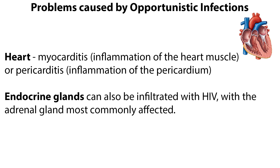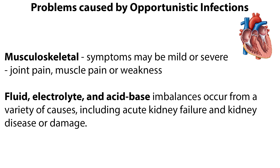Opportunistic infections can also affect the heart by producing myocarditis, or inflammation of the heart muscle, or pericarditis, inflammation of the pericardium. Endocrine glands can also be infiltrated with HIV, with the adrenal gland most commonly affected. Musculoskeletal symptoms are common, and joint pain, muscle pain, or weakness may result from acute infection, drug therapy, or loss of muscle mass. Fluid, electrolyte, and acid-base imbalances occur from a variety of causes, including acute kidney failure and kidney disease or damage.